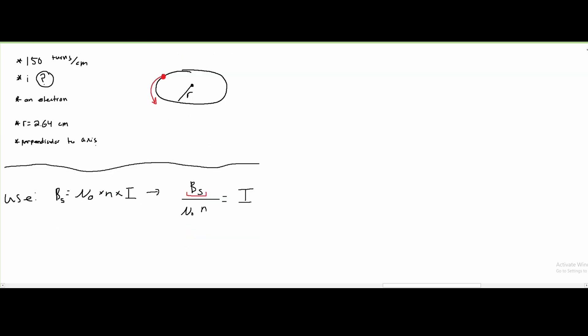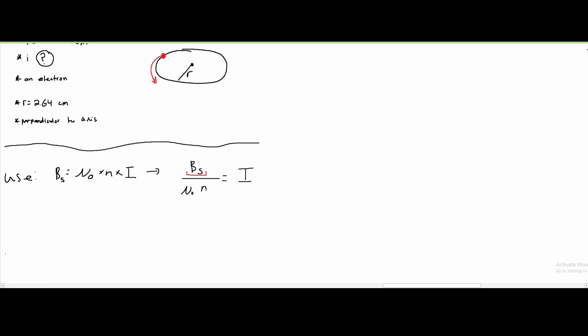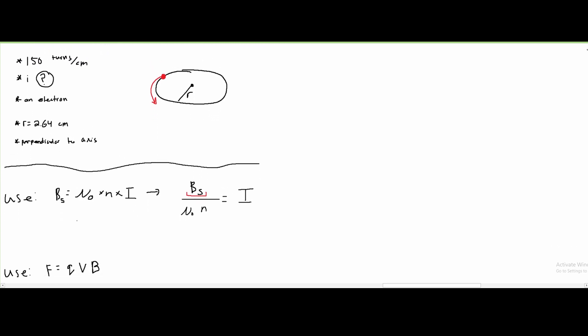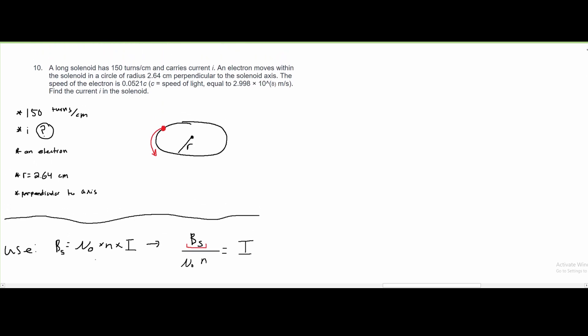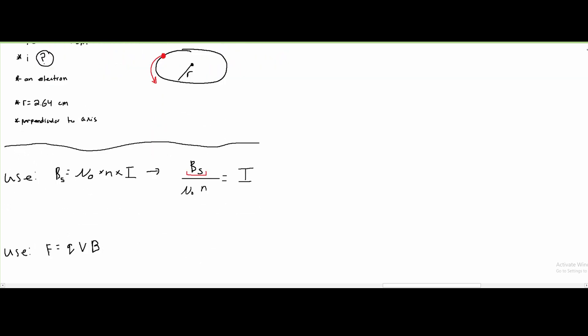So we're going to have to find Bs. And the way we can find Bs is by using another formula, and that is that force equals charge times velocity times B. We are given our charge, the charge of the electron. We know the charge of the electron. We are given the velocity, but we don't know the B or the F.